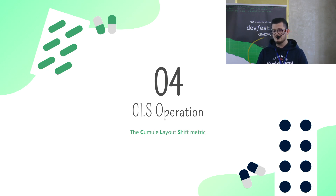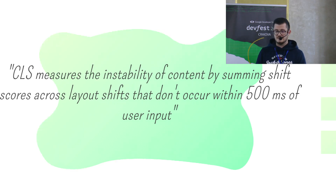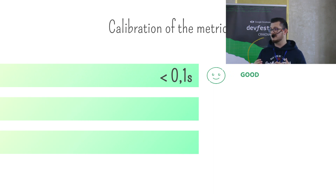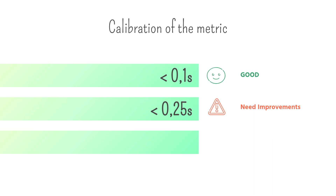Now let's go to the Cumulative Layout Shift metric. CLS measures the instability of content by summing shift scores across layout shifts that don't occur within 500 milliseconds of user input. If your CLS score is less than 0.1, your score is good. Between 0.1 and 0.25, your score needs improvement. Above 0.25, your score is poor and big improvements must be done — the architecture of your page elements may need to be reviewed.